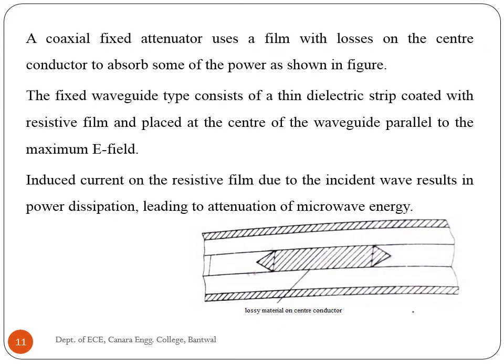A coaxial fixed attenuator uses a film with losses on the center conductor to absorb some of the power. The fixed waveguide type consists of a thin dielectric strip coated with resistive film, placed at the center of the waveguide parallel to the maximum E-field. Induced current on the resistive film due to the incident wave results in power dissipation, leading to attenuation of microwave energy. The dielectric strip is tapered at both ends over a length of more than half a wavelength to reduce reflections. The resistive vane is supported by two dielectric rods separated by an odd multiple of quarter wavelength and perpendicular to the electric field.